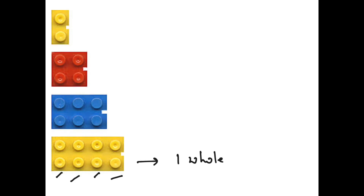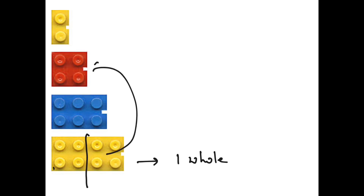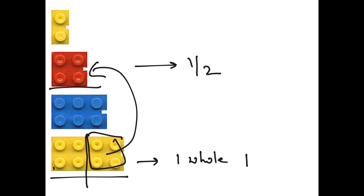This is a very simple activity. Take these Lego blocks — see, here it is 1, 2, 3, and 4. You can say this is one whole part. These two is one, this two is one, this two is one, and this two is one. Now if you do half of this, this is what we get. So if this is one, this will be one by two. See, four parts — this is the half of one, and this is also the half.